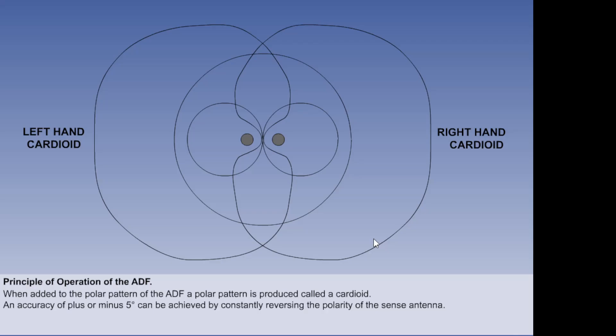The signal accuracy can be further increased to that required by ICAO, namely plus or minus 5 degrees, by reversing the polarity of the sense antenna to produce a right-hand cardioid, and then switching between the two about 120 times a second.